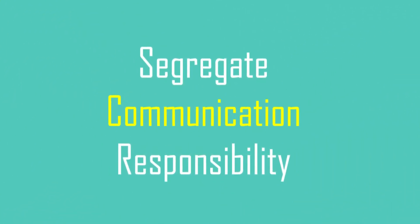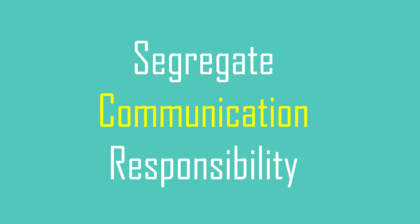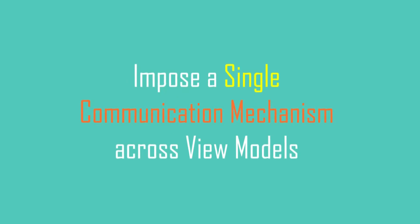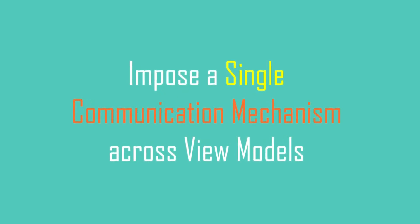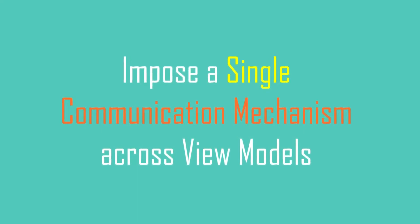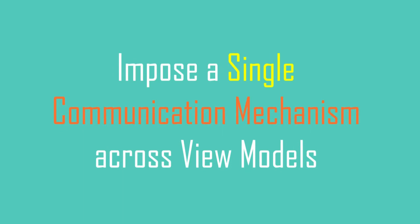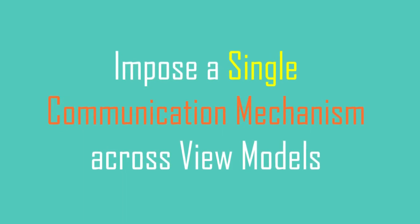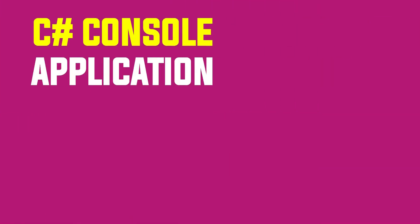Therefore in such cases it is really a good architecture decision if we segregate the communication responsibility to someone else and impose a single communication mechanism across view models. That way code maintenance becomes easy, and it will definitely reduce system bugs, because generally most bugs are injected during the interactions between objects.